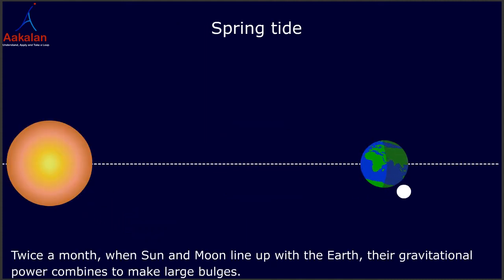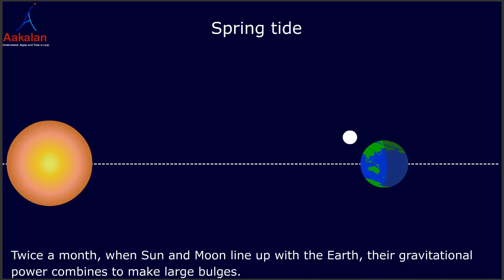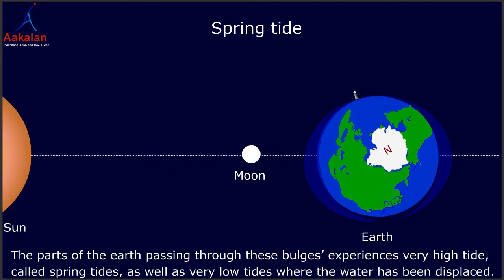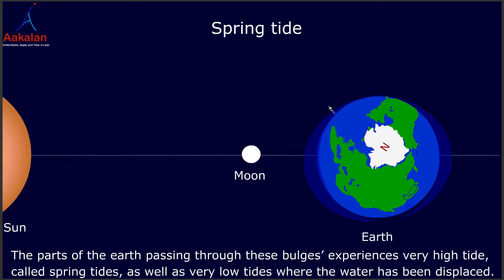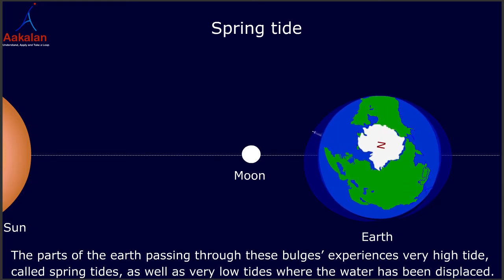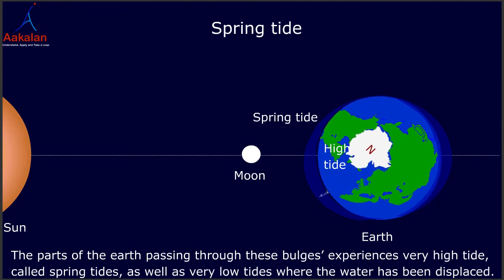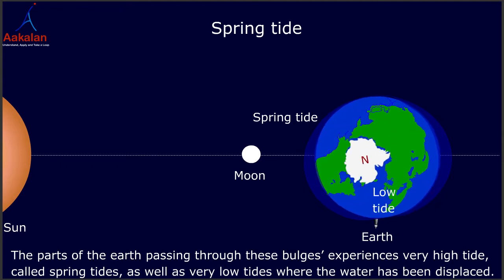Twice a month, when the Sun and Moon line up with the Earth, their gravitational power combines to make large bulges. The parts of the Earth passing through these bulges — in this case near the lighthouse — experience very high tides, called spring tides, as well as very low tides where the water has been displaced.